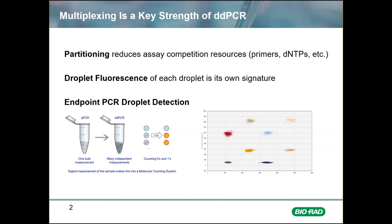Each droplet partition will have its own fluorescence, allowing for many more possible positive clusters to be identified clearly. Here is a 2D plot with three assay targets testing positive droplets that can be quantified with just two fluorescent channels. Detecting the droplets after the PCR reaction is complete — otherwise referred to as endpoint detection — means that differences in efficiency caused by the multiplex will have no impact on the quantification of the sample.